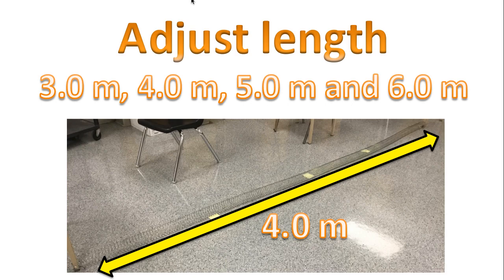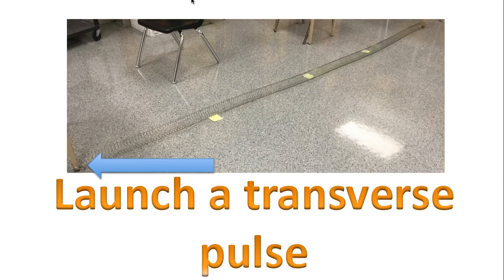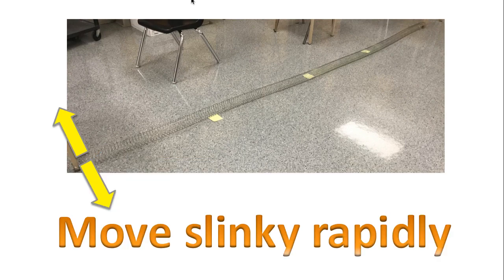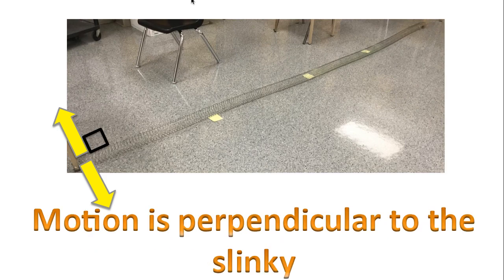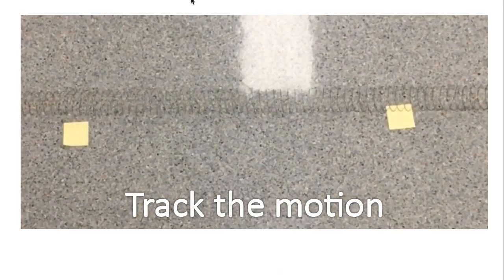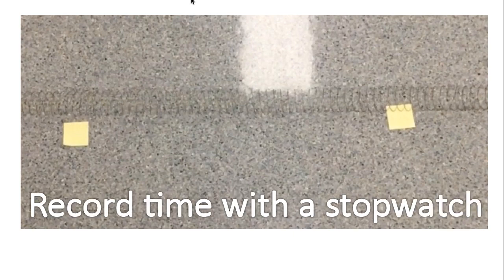Today we'll be using four different lengths: we'll stretch the slinky to three meters, four meters, five meters, and finally six meters. We'll be launching a transverse pulse. To create a transverse pulse we need to move the slinky rapidly back and forth, and the motion will be perpendicular to the slinky itself.